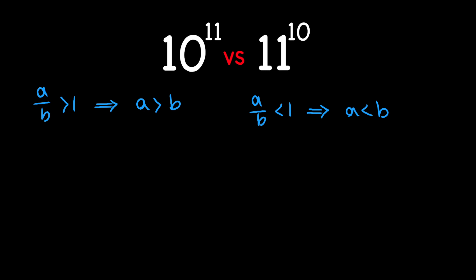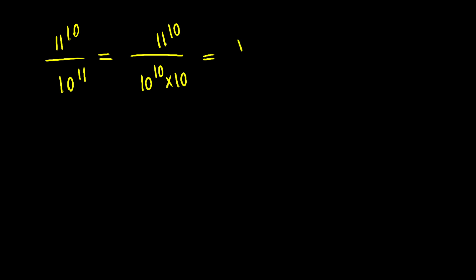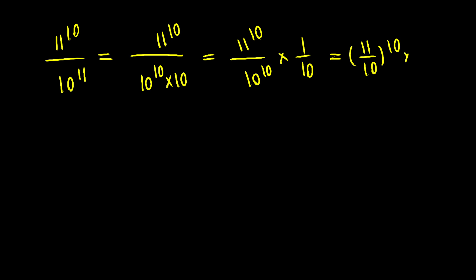In the first method, what I want to do is to take a look at the ratio of our numbers and see if it is greater than one or less than one. So let's go ahead and divide the second number, which is 11 to the power of 10, by the first number, which is 10 to the power of 11. Next, let's replace 10 to the power of 11 with 10 to the power of 10 times 10. By doing that, we're going to have the same power both in the top and in the bottom. So this equals 11 to the power of 10 divided by 10 to the power of 10, times 1 over 10, which equals (11 over 10) to the power of 10, times one tenth.